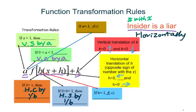When A equals negative 1, the negative sign always does a reflection — it will be reflected across the X-axis. When B equals negative 1, it will be reflected across the Y-axis.